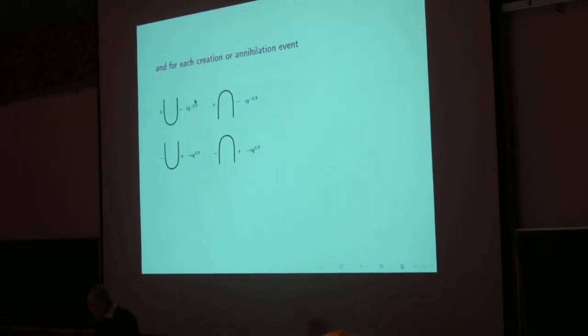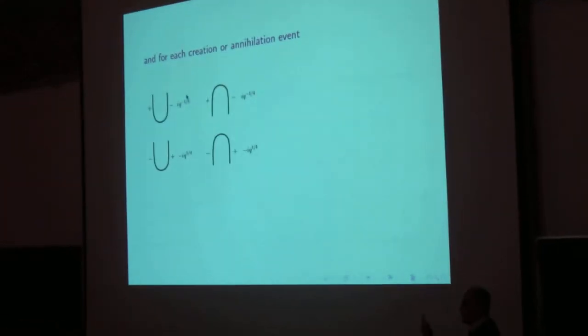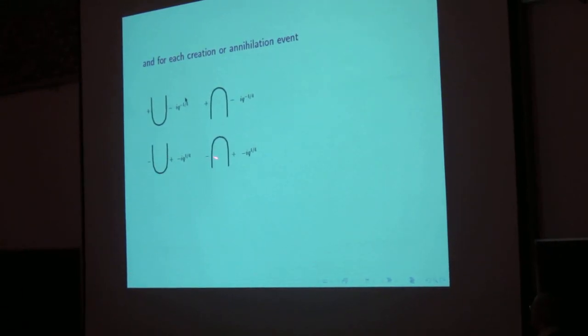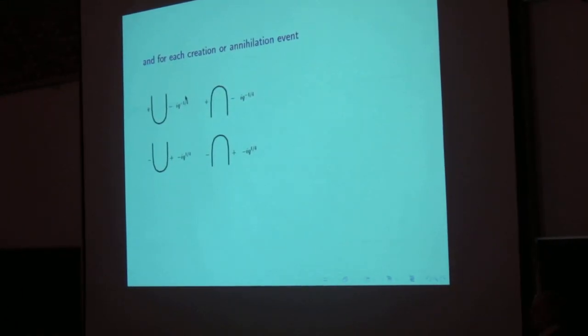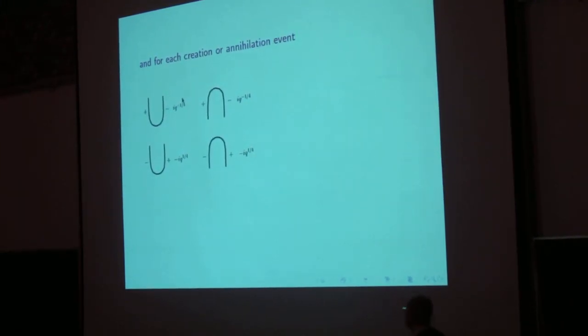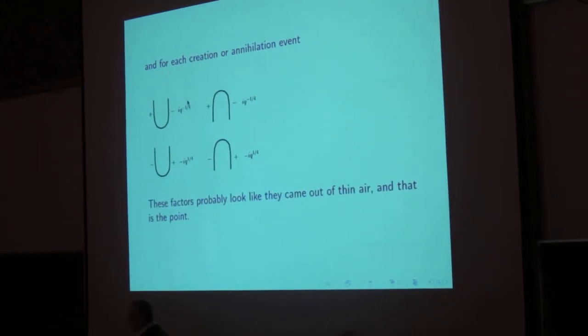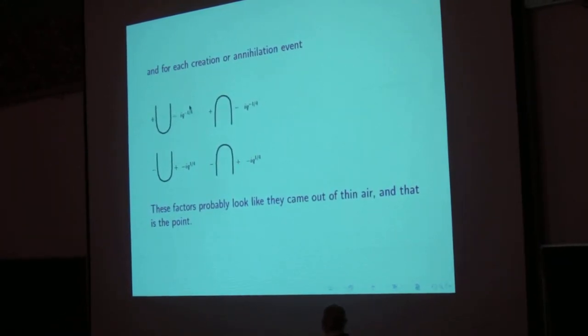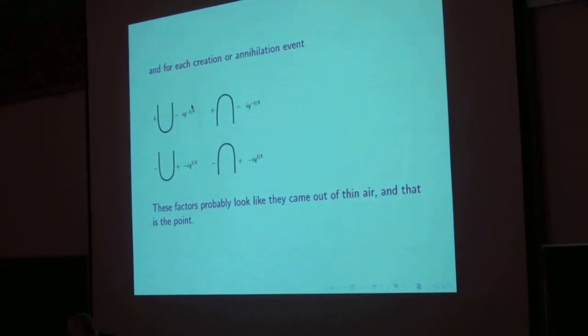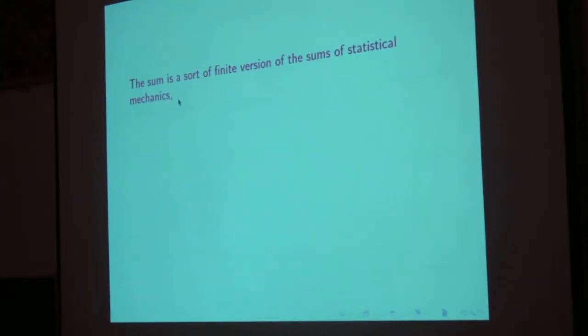And then similarly for maxima and minima, which if you think of the vertical direction as time, you could think of the maxima and minima as creation and annihilation events for a particle-antiparticle pair. So at a maximum and a minimum, we create or annihilate the pair, which is weighted by these factors. And these factors probably look like they came out of thin air, and that's the point. So there are these crazy factors that come out of thin air, and you do a discrete version of statistical mechanics.